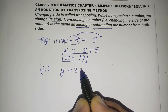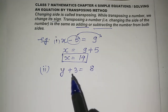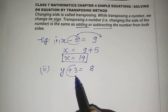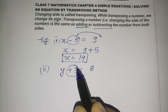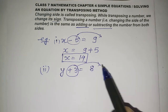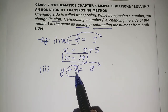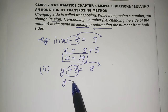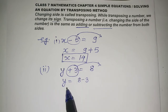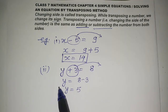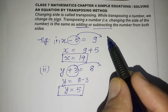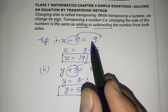Second example: y plus 3 equals 8. We will transpose plus 3 — changing its side means we change its sign. Plus 3 becomes minus 3 on the right-hand side: y equals 8 minus 3, so y equals 5. We have solved the equation by the transposing method — we changed the side of the number.